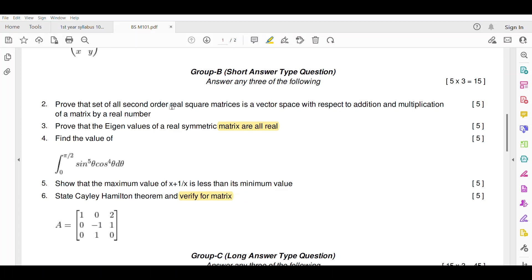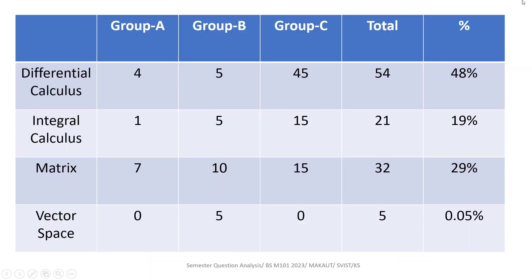In Group B, there are 5 marks from matrix, 5 marks from vector space, 5 marks from differential calculus, and 5 marks from integral calculus. In Group C, there are 15 marks from matrix, 5 marks from integral calculus, 5 marks from differential calculus, and 26 marks from matrix in total.